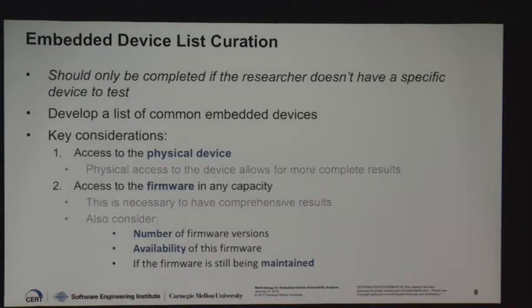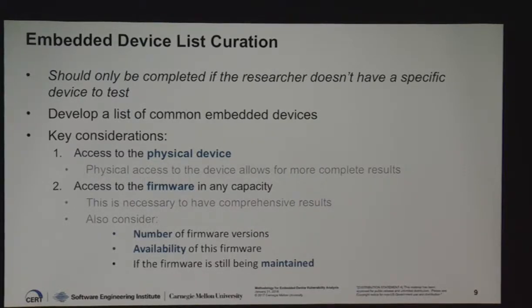Starting with embedded device list curation — this only needs to be completed if the researcher doesn't have a specific device in mind to test. We had to do this because we wanted to apply the methodology to something. Some key considerations when choosing a device were: access to the physical device, access to the firmware, the number of firmware versions, firmware availability, and whether it was still being maintained with multiple versions to test.